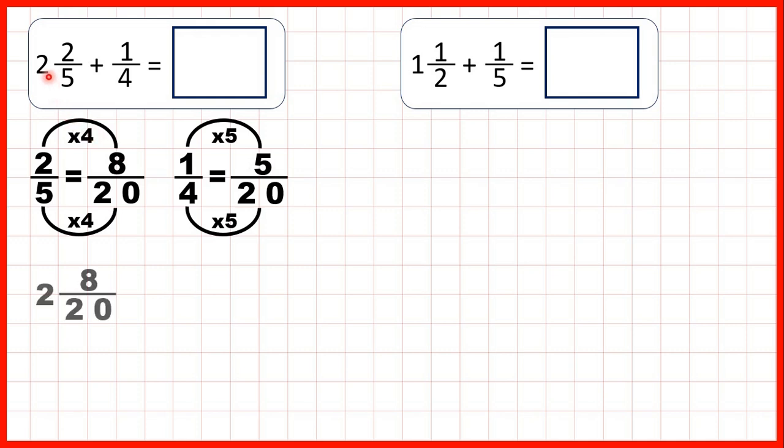So we can rewrite our question, instead of 2 and 2 fifths we can write 2 and 8 20ths because that's equivalent, and instead of adding 1 quarter we can add 5 20ths.